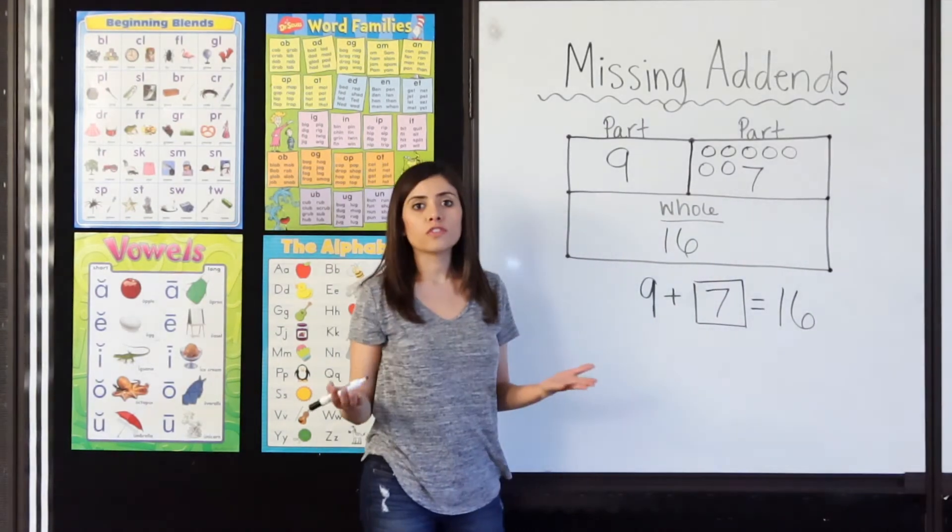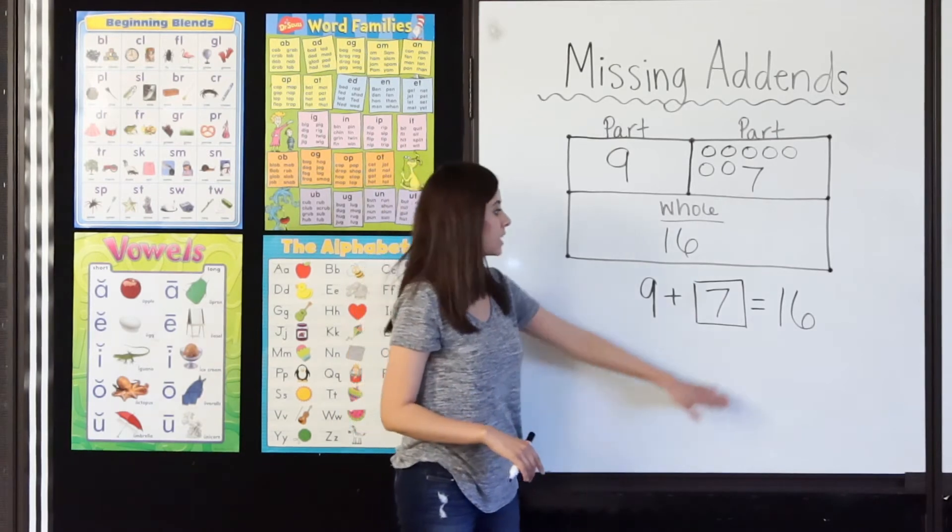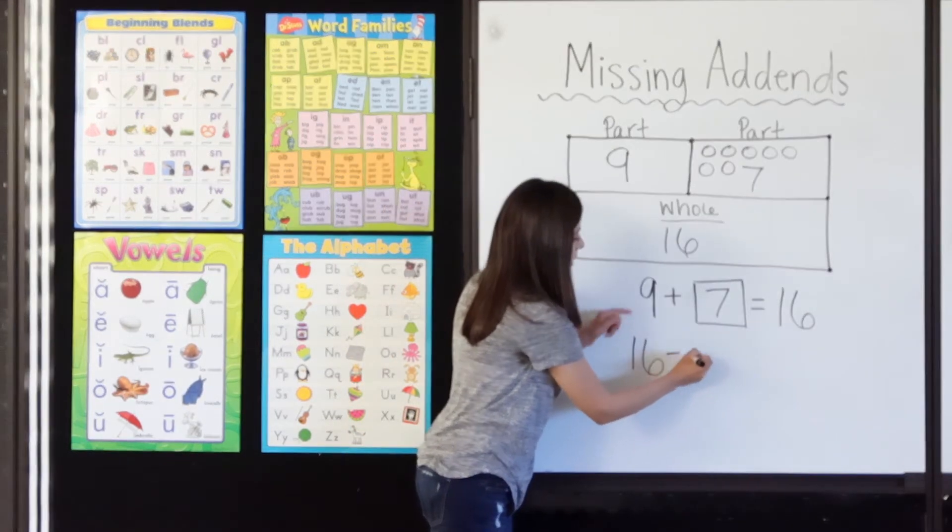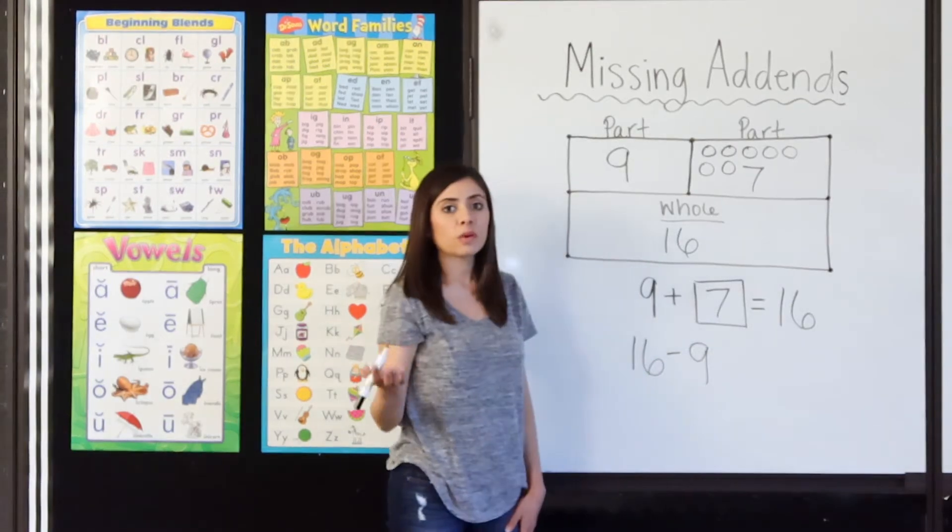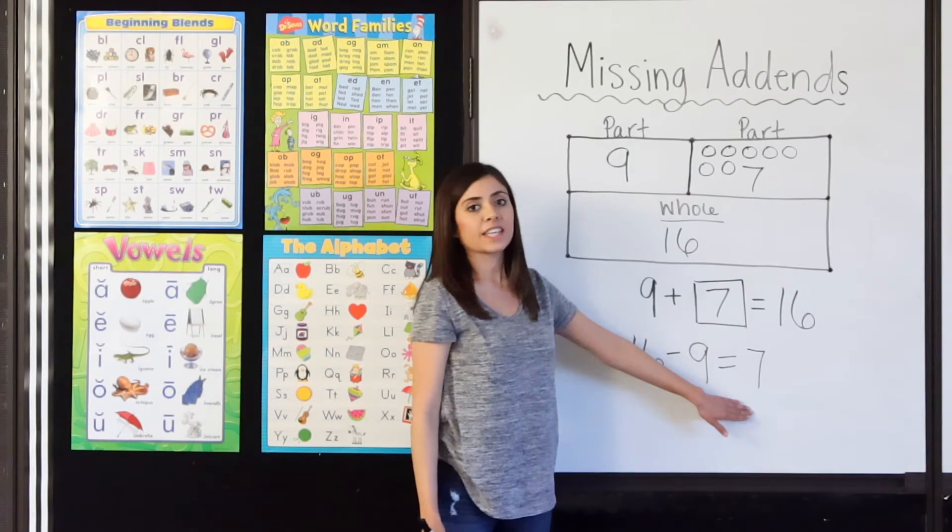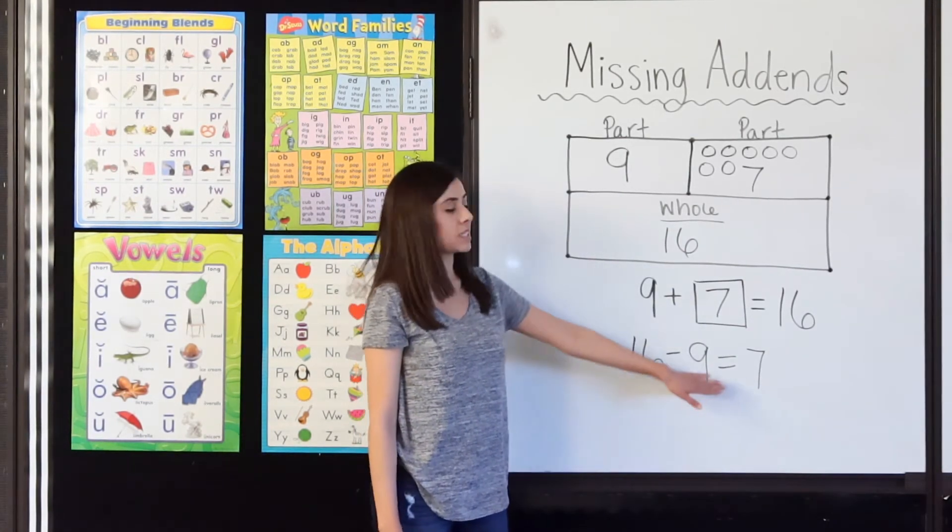Don't forget, just like with our last example, what you could have done is taken 16 and subtracted 9. That would have given you 7, the missing addend. So, you can also use related facts to find your missing addend.